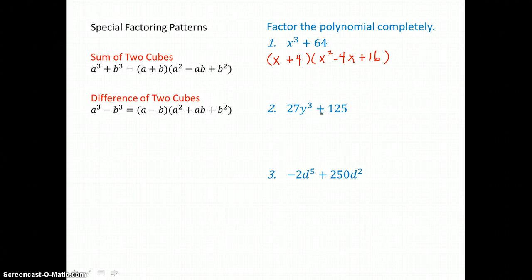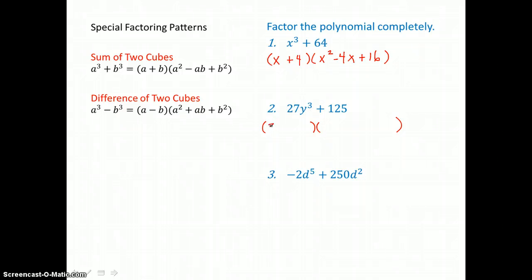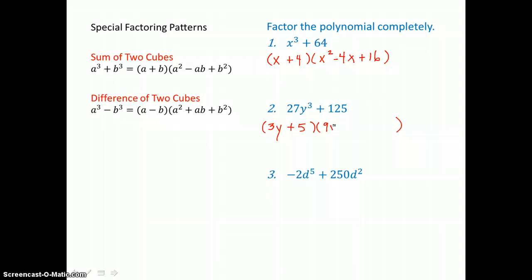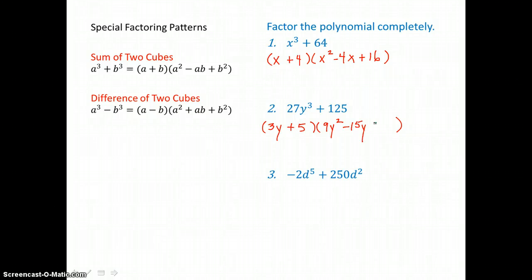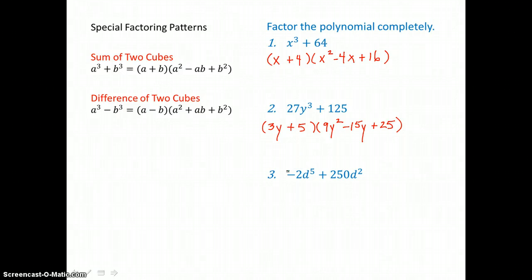In the second example we're factoring the sum of two perfect cubes again into a binomial times a trinomial. The cube root of the first term is 3y, and the cube root of the second term is 5. To get the trinomial, we square 3y to get 9y squared. The middle term is 3y times 5 equals 15y, but we change the sign to negative 15y. The third term is 5 squared equals 25. So that sum of two perfect cubes is completely factored.